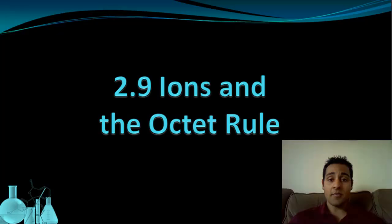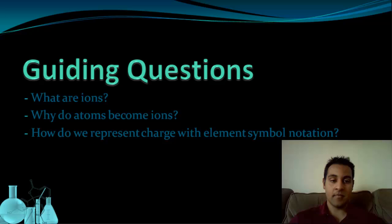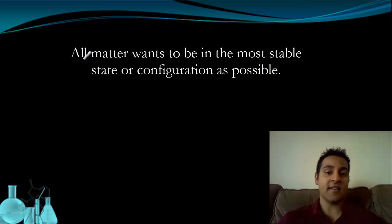Welcome to Ions and the Octet Rule. In this video, we're going to be looking at what ions are, why atoms become ions, and how we can represent charge with element symbol notation. I want to start by mentioning one of the general themes that we're going to continue to see as we move through the year, and that is that all matter wants to be in the most stable state or the most stable configuration as possible.